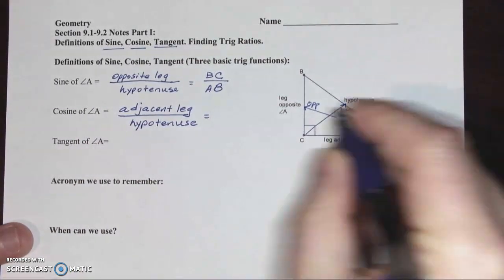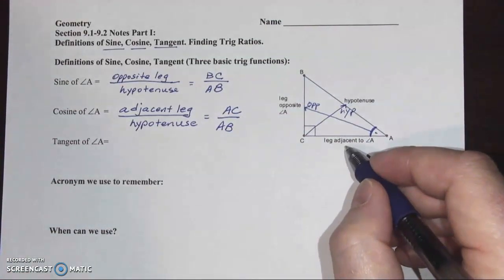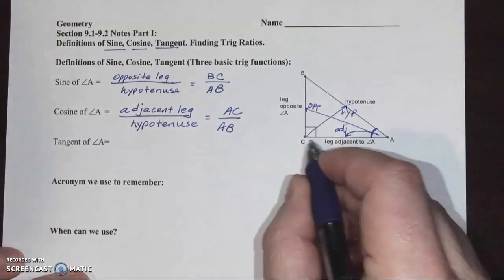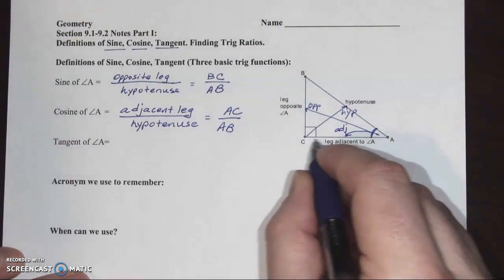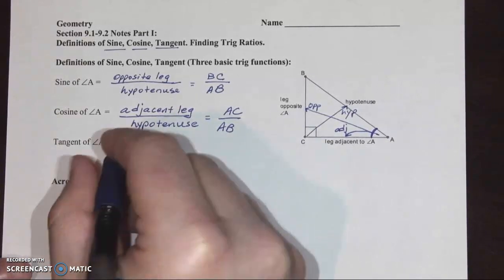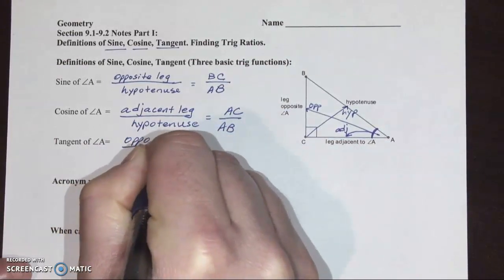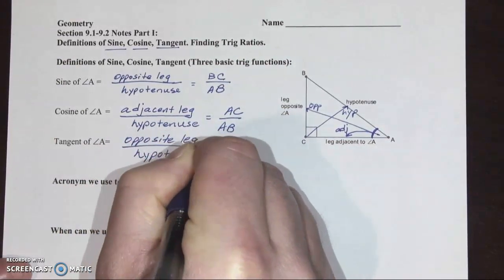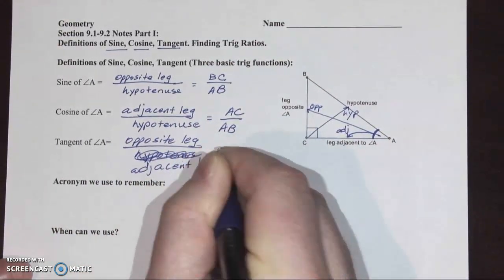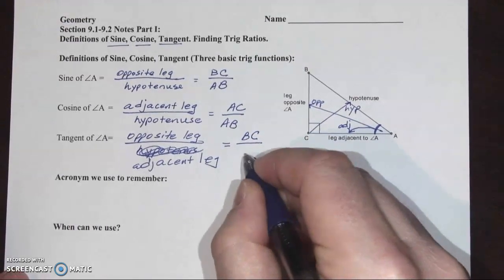In this case, cosine of A is segment AC over AB. If you're paying attention in English class, you know the word adjacent means next to. So the leg right next to angle A, or touching angle A, would be segment AC. Tangent of an angle is the ratio of the opposite leg over the adjacent leg. So for angle A, the opposite leg would be BC and the adjacent leg AC.